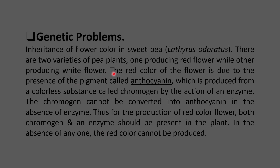Here, there are two varieties of sweet pea plants — one producing red flowers while the other produces white flowers. The red color of the flower is due to the presence of the pigment called anthocyanine, which is produced from a colorless substance called chromogen under the action of an enzyme. For the production of red color flowers, both chromogen and the enzyme that can convert chromogen into anthocyanine must be present.